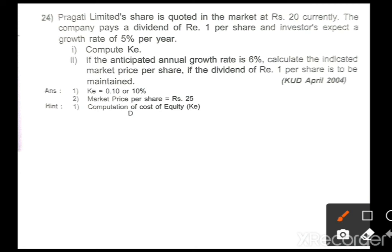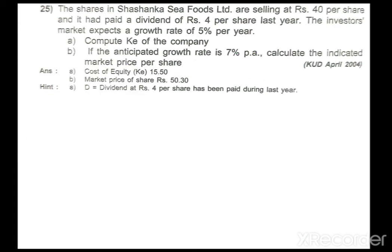Using Ke = 0.10, D = 1 rupee, and g = 0.06, you will get market price P = rupees 25. This is homework. Similarly, the Shree company problem is also homework — go through the given information, keep the formula in mind, identify the required values, and simplify accordingly.